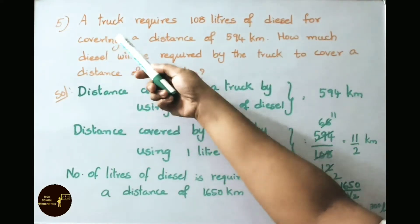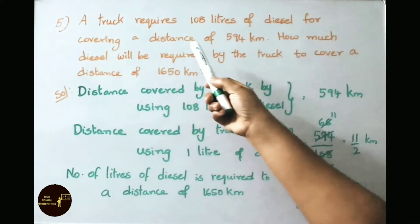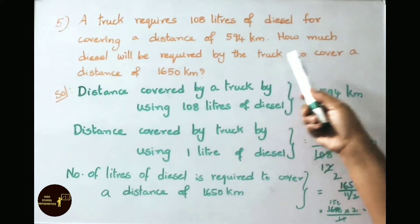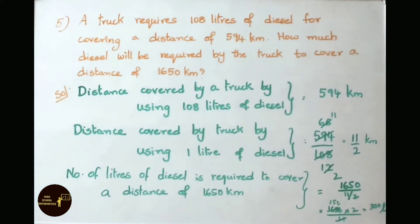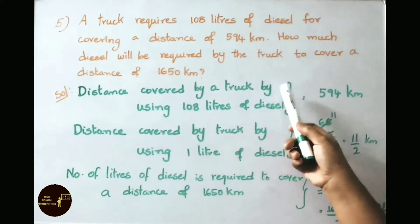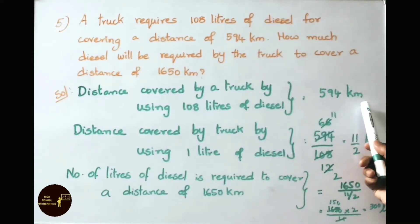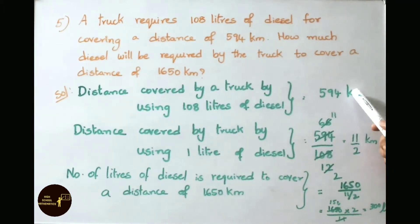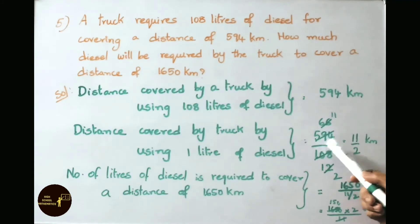Question number 5: a truck requires 108 liters of diesel for covering a distance of 594 kilometers. How much diesel will be required by the truck to cover a distance of 1,650 kilometers? Distance covered by the truck using 108 liters of diesel is 594 kilometers. Distance covered using 1 liter of diesel is 594 by 108, which equals 5.5 (that is 11 by 2) kilometers.